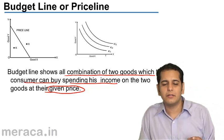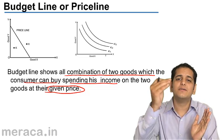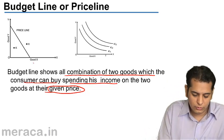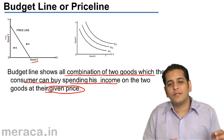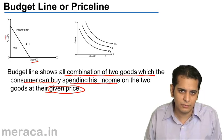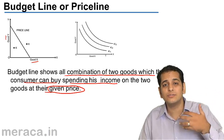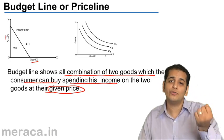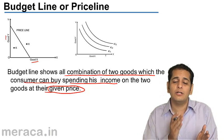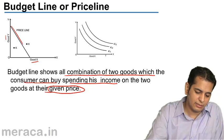A budget line is nothing but a line which sets a budget for you. It tells you that you cannot exceed this budget. How will you spend your budget by spending it on two goods — good X and good Y? When you are spending on these two goods, you spend so that your satisfaction level is maximum. To maximize your satisfaction level, you will consume more and more of those goods, but you have a limitation — you have a limited income.